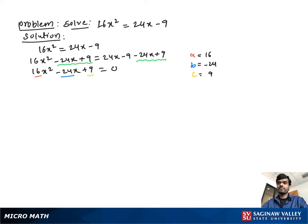So we determine the value of a, b, c. a equal to 16, b equal to negative 24, and c equal to 9. Now using quadratic formula: x equal to negative b plus minus square root b square minus 4ac over 2a.